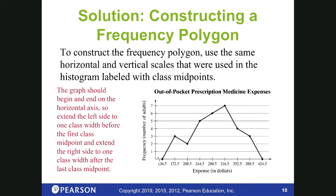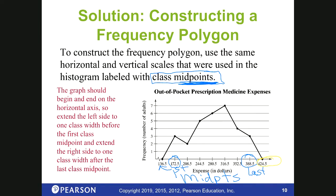To construct the frequency polygon, use the same horizontal and vertical scales as the histogram, but this time label the horizontal axis with the class midpoints — that's why we calculated the midpoint column. They subtract one class width from the first midpoint and add one class width past the last midpoint so the polygon can come back down to the x-axis, starting and ending at zero.